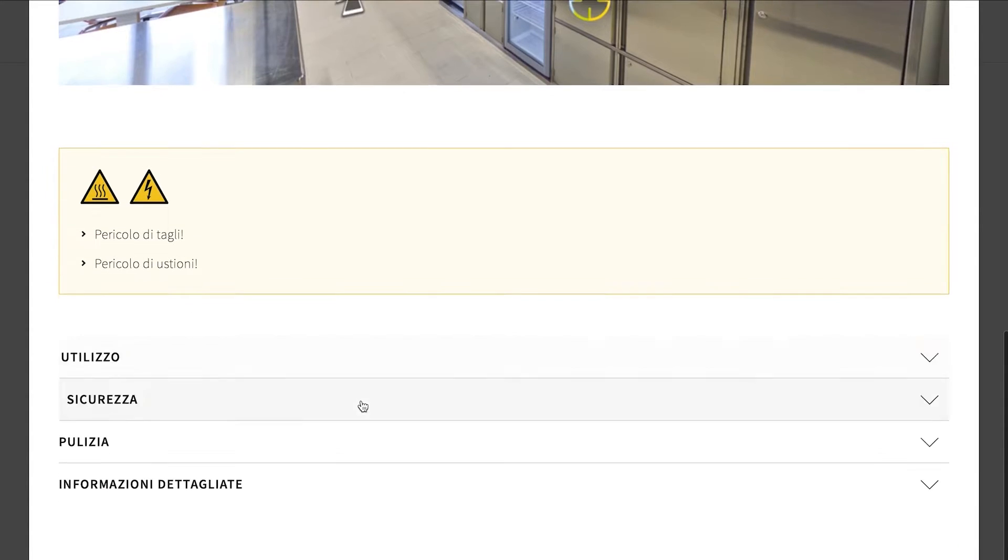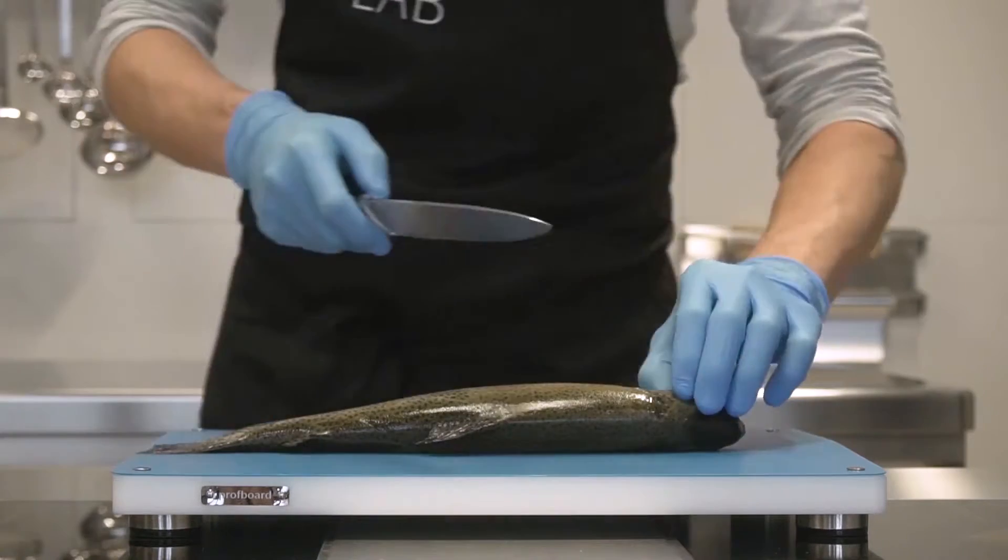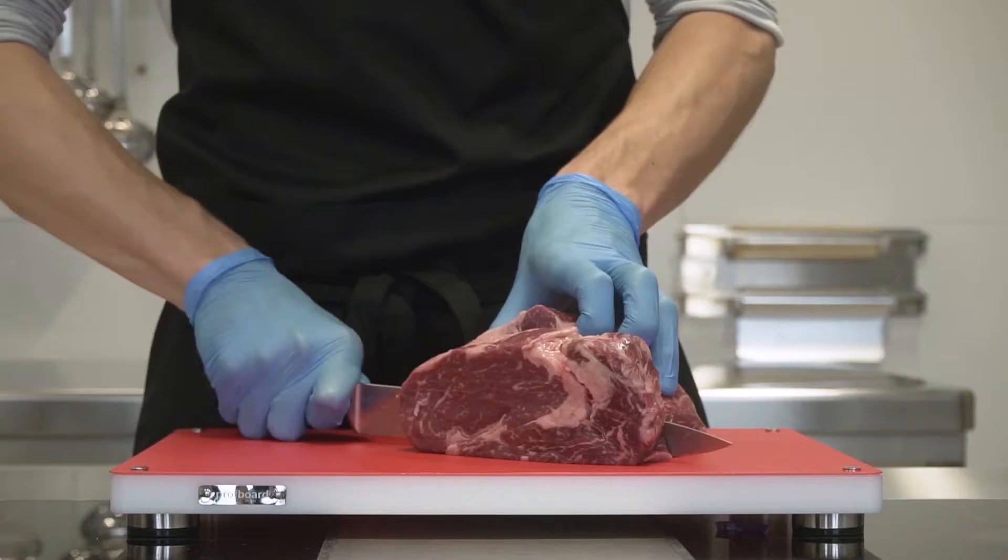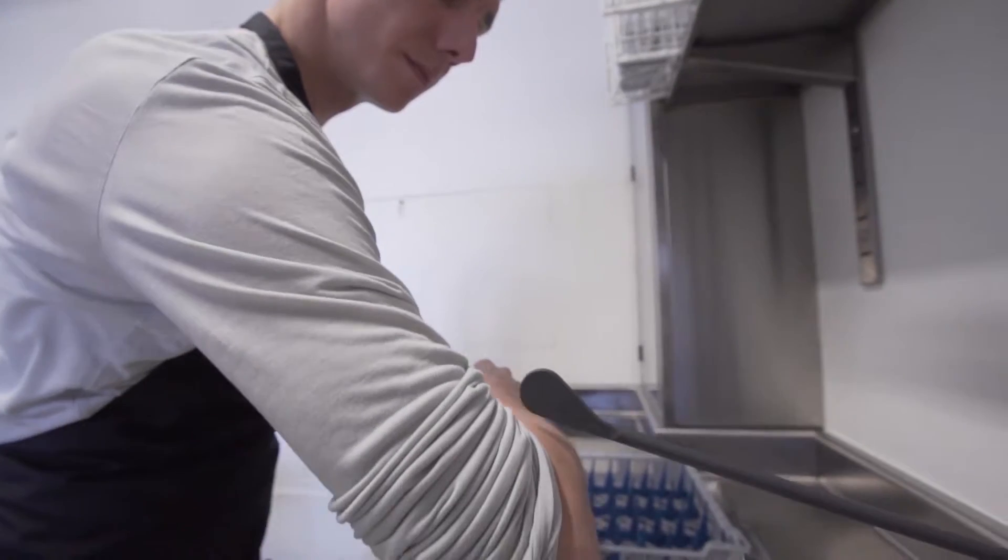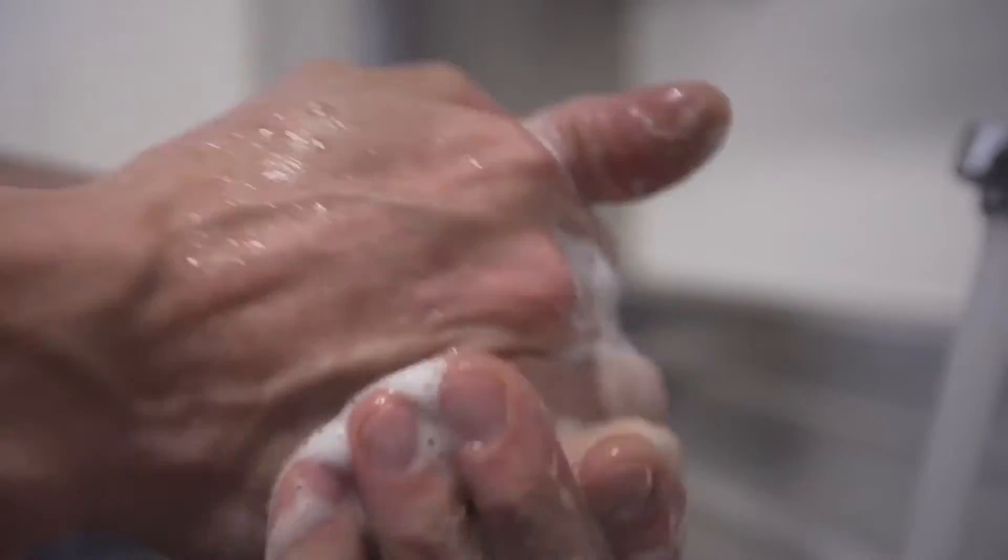After use, please always put the equipment back where it belongs. Only prepare food on the chopping boards provided. Consult the color code when choosing which mat to attach to the chopping board. Use the wash basin in the washing up area to wash and disinfect your hands between two food processing steps.